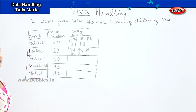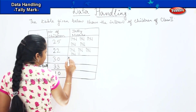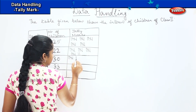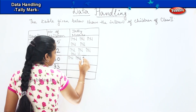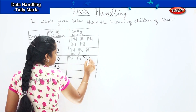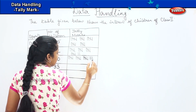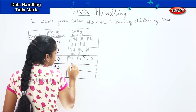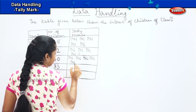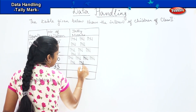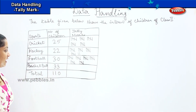The next one says 30. How am I going to draw? 1, 2, 3, 4, 5, 6, 7, 8, 9, 10, 11, 12, 13, 14, 15, 16, 17, 18, 19, 20, 21, 22, 23, 24, 25, 26, 27, 28, 29, 30. Clear?